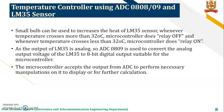A small bulb can be used to increase the heat of the LM35 sensor. Whenever the temperature crosses more than 32 degree Celsius, the microcontroller turns the relay off. Since the output of LM35 is analog, the analog to digital converter IC 0809 is used to convert the analog output voltage of the LM35 to an 8-bit digital output suitable for the microcontroller. The microcontroller accepts the output from the ADC to perform necessary manipulations and further calculations.